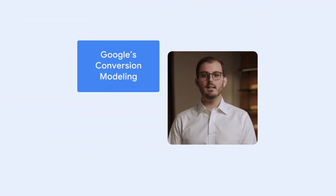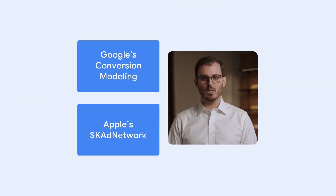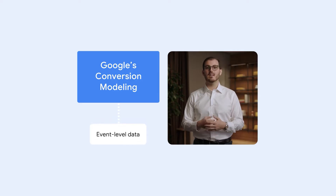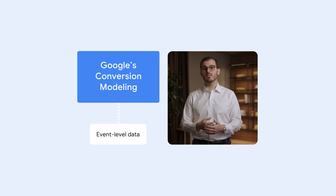Two key iOS measurement frameworks exist which Google currently supports: Google's conversion modeling and Apple's SK Ad Network, also known as SKAN. Google's conversion modeling is reported in the Google Ads interface and uses Google AI to assess event-level performance of your campaigns when a subset of conversions cannot be directly linked to ad interactions. Over the last two years, we've continued to improve our conversion modeling using SKAN data, and as of November 2024, we have launched back-end model quality enhancements to make our reporting in Google Ads stronger and more actionable.